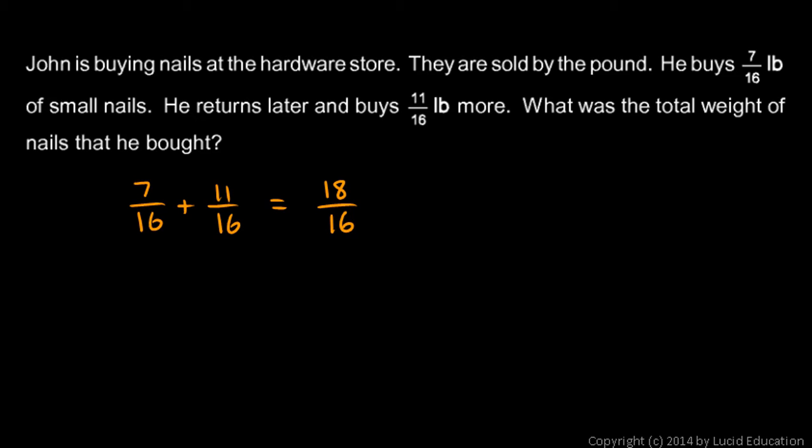And that fraction can be reduced. Both of those can be divided by two. So eighteen divided by two gives me nine, and sixteen divided by two gives me eight. So I end up with 9/8 pounds, and you can probably see pretty easily that that's 1 and 1/8 pound.